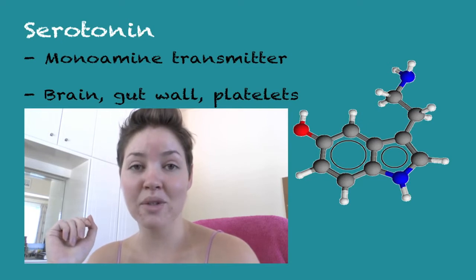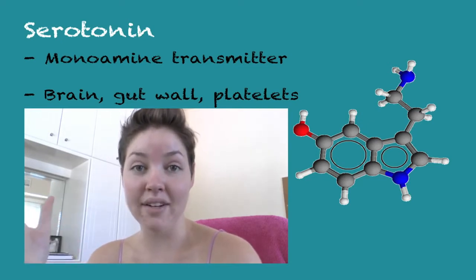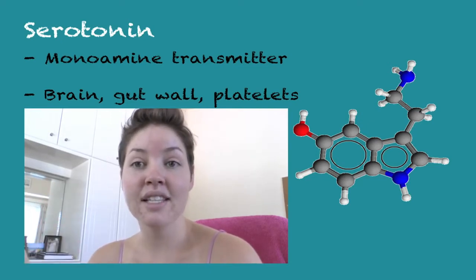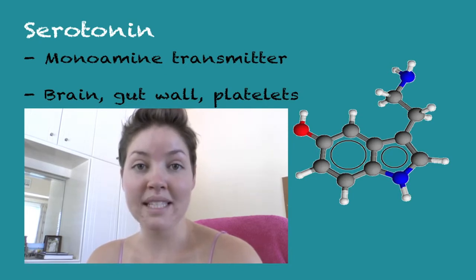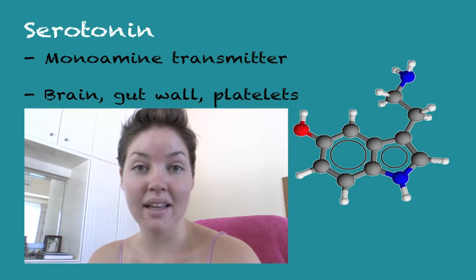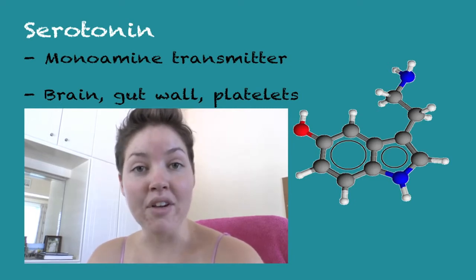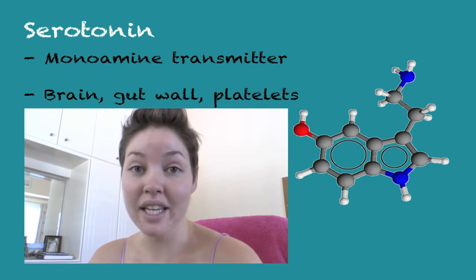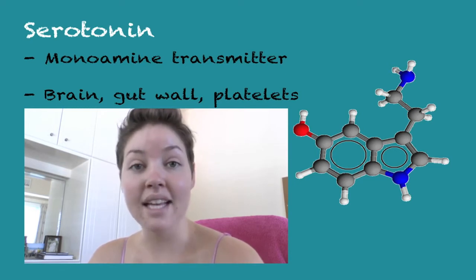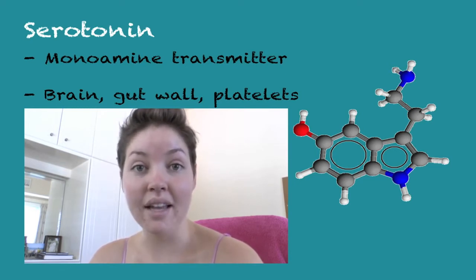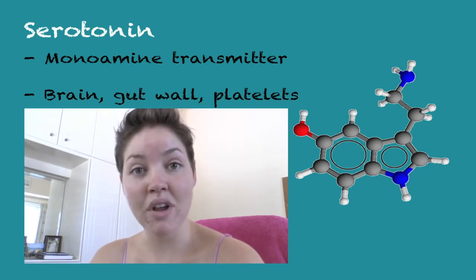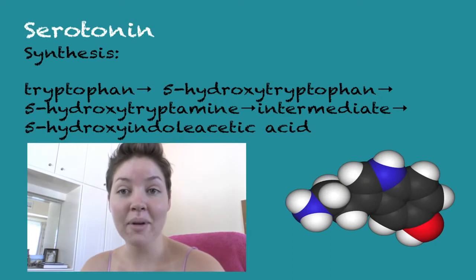The first thing I want to talk about is what is serotonin. Serotonin is an autacoid, which means that it's a local hormone, and it's also a monoamine transmitter. It's found in the brain as well as in the periphery. In the periphery, you can find it in the gut wall, especially in the small intestine, in the enterochromaffin cells and neurons. It is also found in platelets and central nervous system neurons. Now I'm going to explain a little bit about the synthesis of serotonin.